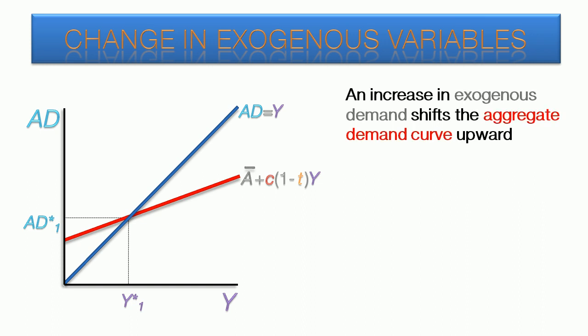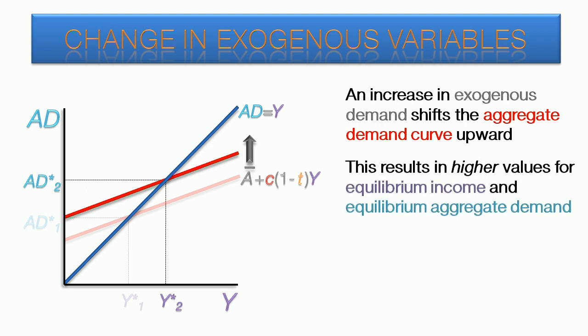A change in exogenous demand would result from a change in any of the following: autonomous consumption, transfer payments, investment, government spending, or net exports. If there is an increase in any of those components, the entire aggregate demand curve would shift up. This would lead to a higher equilibrium value for aggregate demand and national income. Note that the slope remains unchanged in this scenario.